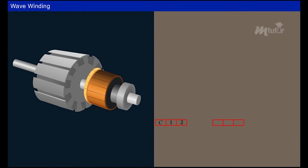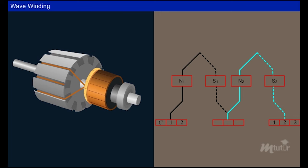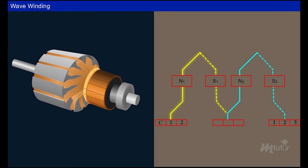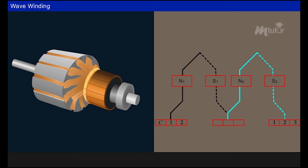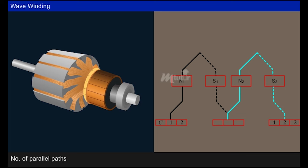In wave winding, the completing end of a coil is connected to the starting end of another coil under a different pole pair, moving ahead and avoiding overlapping. This process continues for the remaining coils. The appearance of this coil winding resembles a wave, hence the name wave winding. Here, regardless of the number of poles, the number of parallel paths is always equal to two.